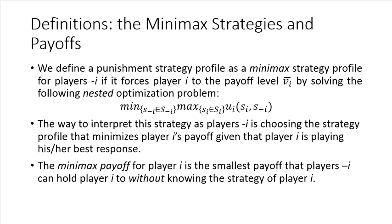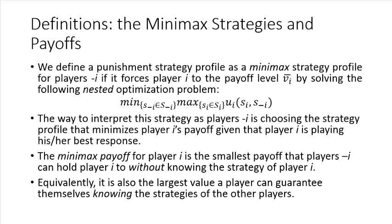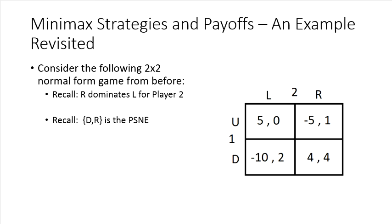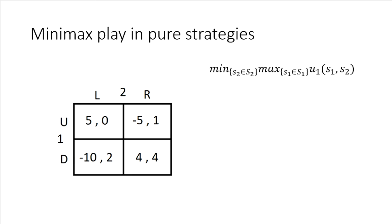Another way to interpret this is that players minus I are choosing the strategy profile that minimizes player I's payoff, given that player I is playing optimally — meaning player I is playing his or her best response. You can also interpret the Minimax payoff for player I as the smallest payoff that the opposition can hold player I to without knowing the strategy choice of player I. Equivalently, this is also the largest value that a player can guarantee themselves knowing the strategies of the other players. We can go back to our two-by-two example, recalling that R dominates L for player two and that Down-Right is the pure strategy Nash equilibrium.